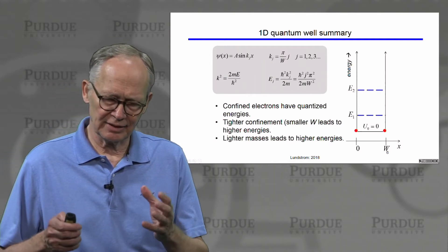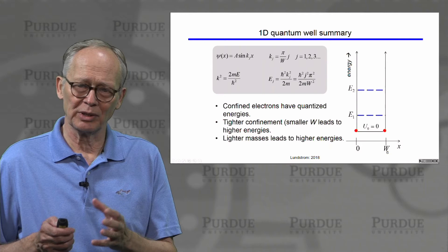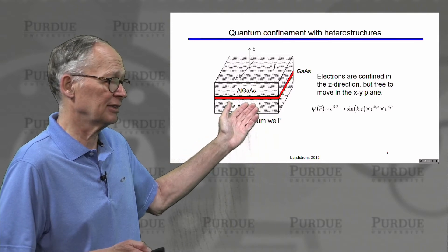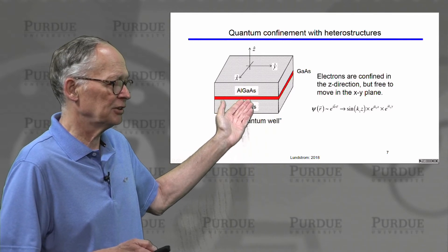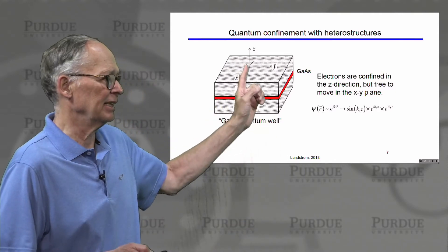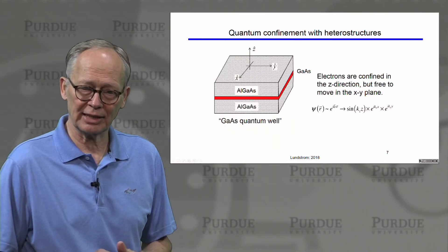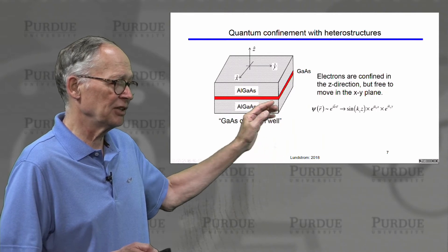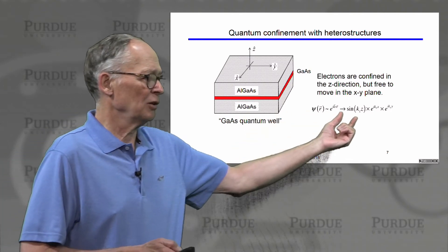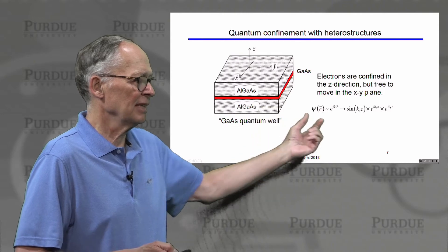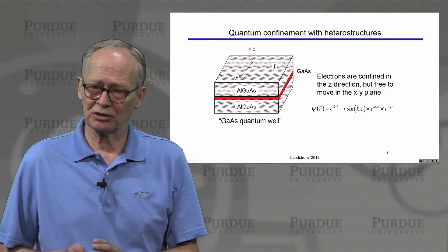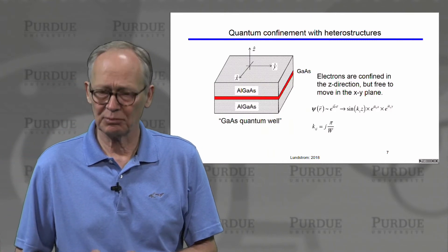So the particle in a box gives us, it's a very simple, in some ways unrealistic problem but it gives us good insight into what happens in real quantum wells. We can produce actual quantum wells in semiconductor structures by sandwiching a small band gap region between two wide band gap regions so the electrons are confined in this example in the z direction. They become two dimensional electrons. They're difficult to move in the z direction, easy to move in the xy plane. And we've seen that their wave functions then look like particle in a box solutions in the confinement direction times a plane wave solution in the xy plane where they're free to propagate. So the wave functions are much different than they would be in a 3D bulk semiconductor structure.